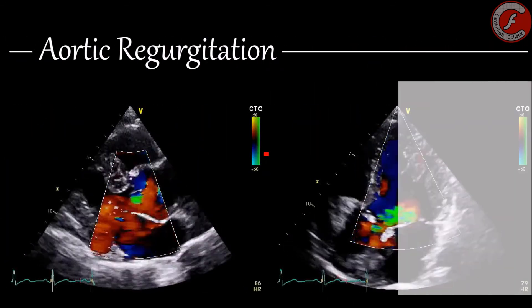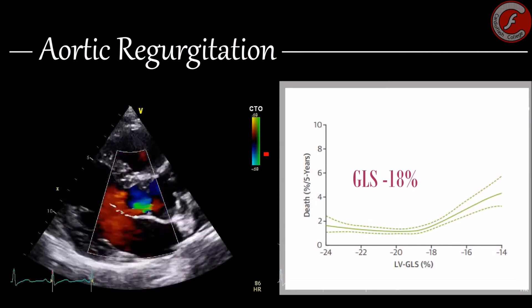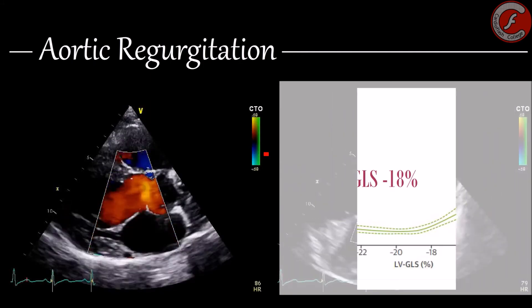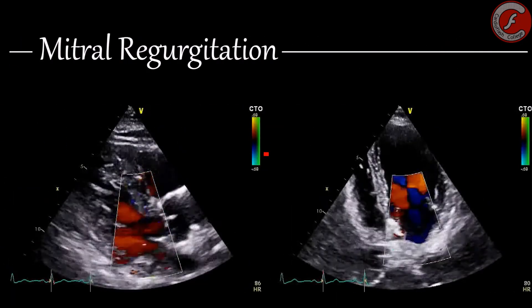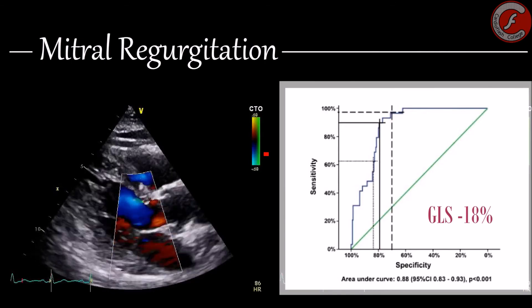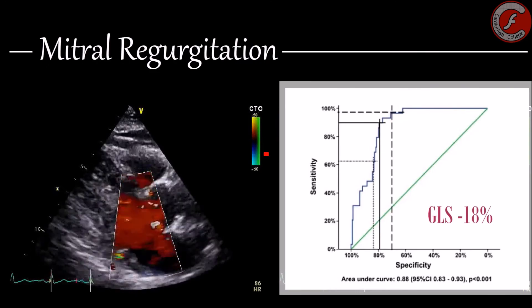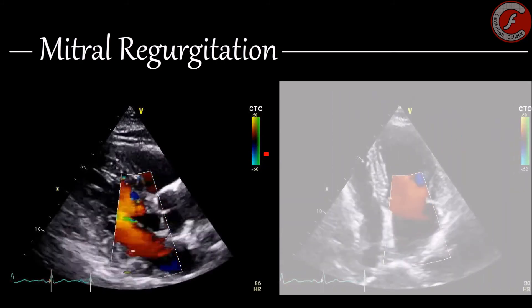It has been proven that a global longitudinal strain value below minus 18% in patients with severe and asymptomatic aortic regurgitation associates with an increase of post-surgical events, and that a value below minus 13% is a predictor factor associated with higher mortality at 5 years of follow-up. Finally, in cases of asymptomatic primary mitral regurgitation with preserved and bordering values of ejection fraction, the global longitudinal strain usually decreases even before the telesystolic diameters of the left ventricle surpass 45 mm, and a value below minus 18% increases the risk of post-surgical left ventricular dysfunction.